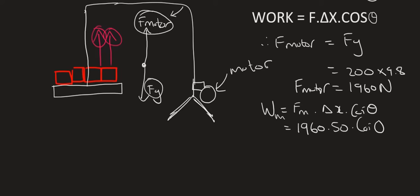And so now we can go type all of that in on the calculator, and we're going to end up with a work of 98,000 joules. So that motor is exerting 98,000 joules on the bricks.